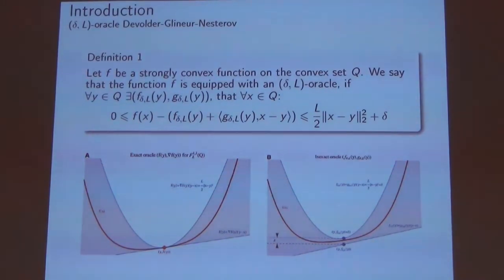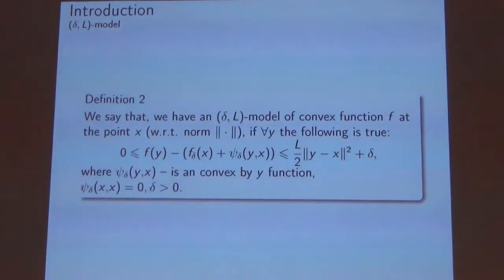The idea of it you can see on this illustration. This oracle allows us to use usual gradient methods for non-smooth optimization and other problems. The extension of this idea is the Delta-L model where we replace the scalar product to arbitrary function psi which satisfies that psi(x,x) = 0 and that psi is a convex function by the first argument.